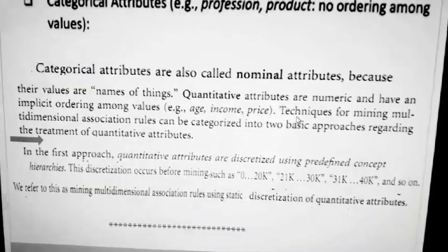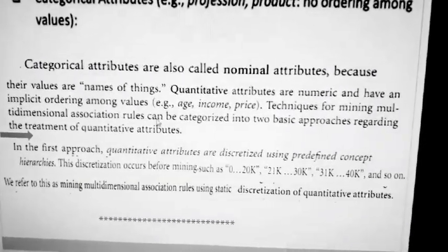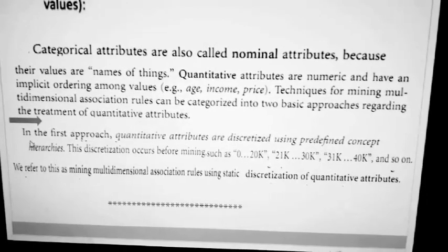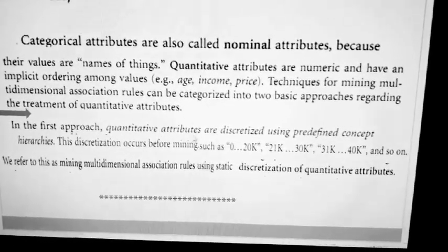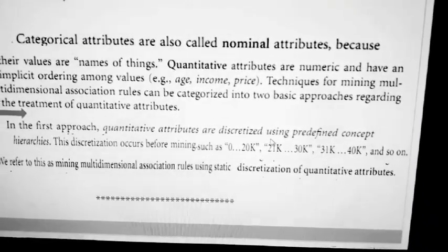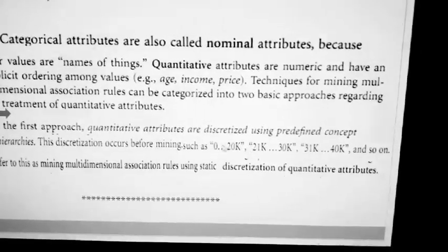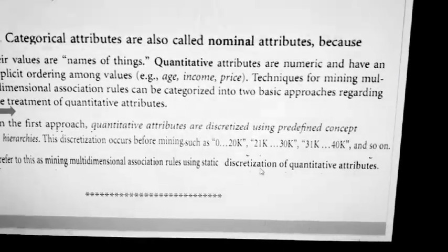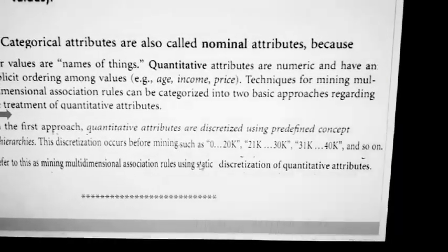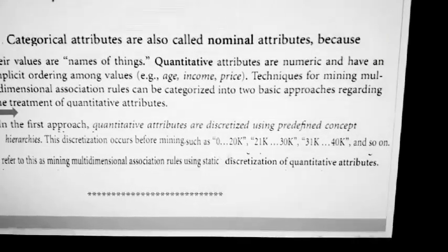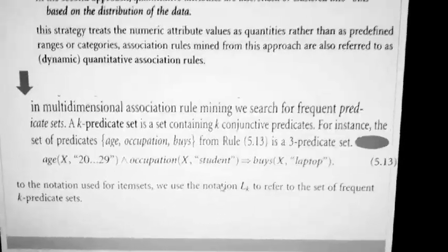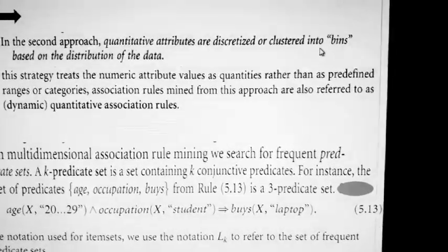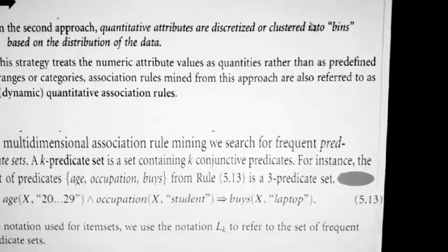Now we'll see techniques for mining multi-dimensional association rules. There are two approaches for treating quantitative attributes. In the first approach, quantitative attributes are discretized using a predefined concept hierarchy — values fall in a fixed range. We call this static discretization of quantitative attributes, because it is fixed and doesn't change.